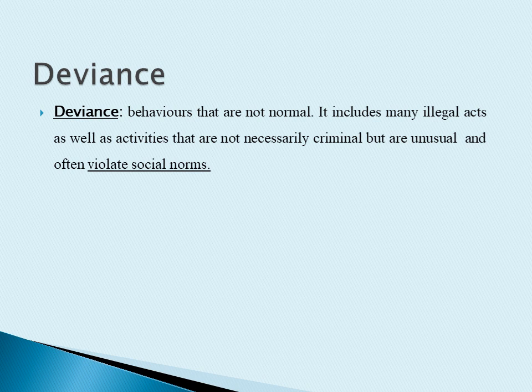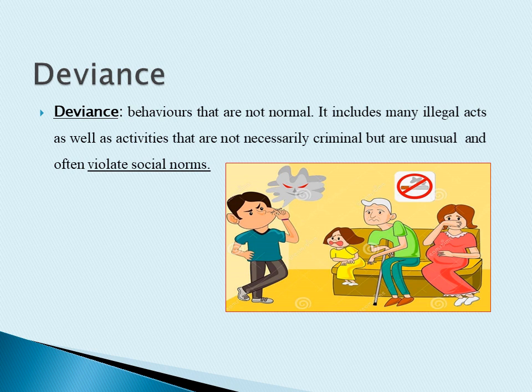For example, using cell phones while driving or smoking in public is a deviance but not a crime. And speeding on a highway, which is a mala prohibita act, is not considered deviant because many people engage in this act — thus, while it is illegal, it is not considered deviant.